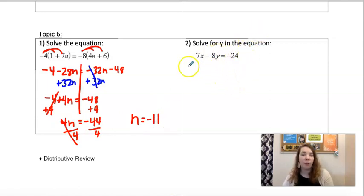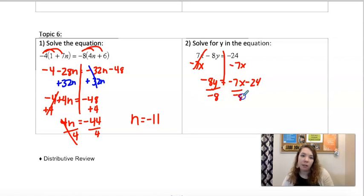And then another literal. Solve for y. So we would start by subtracting 7x from both sides. And then dividing everything by negative 8. So you'll have positive 7/8 x plus 3.